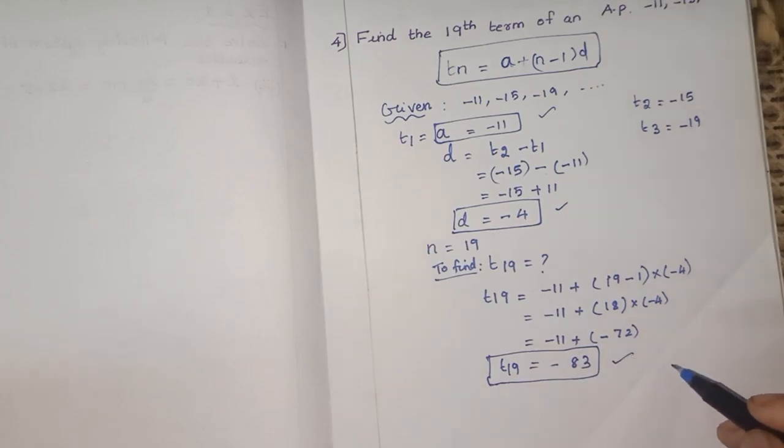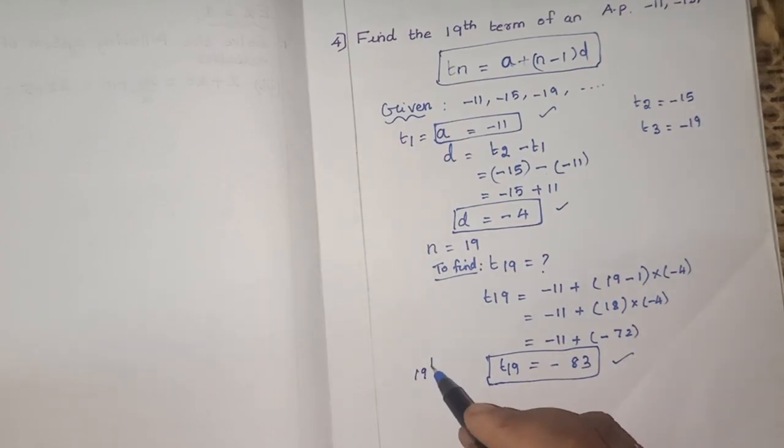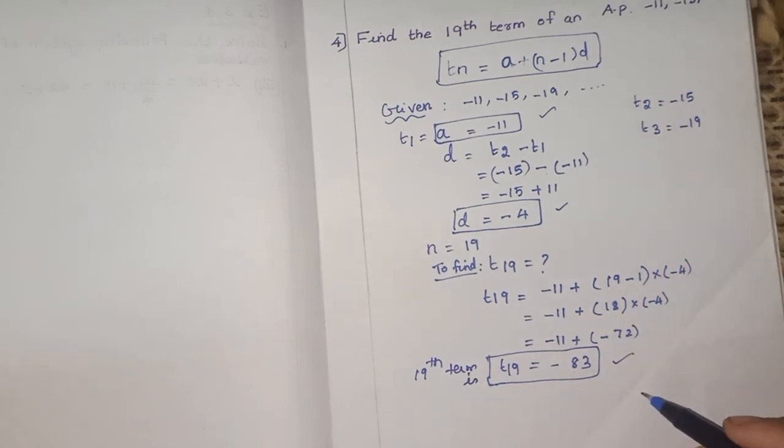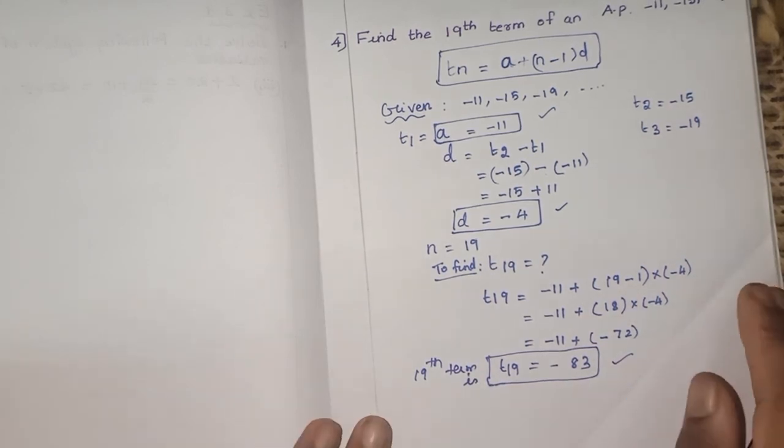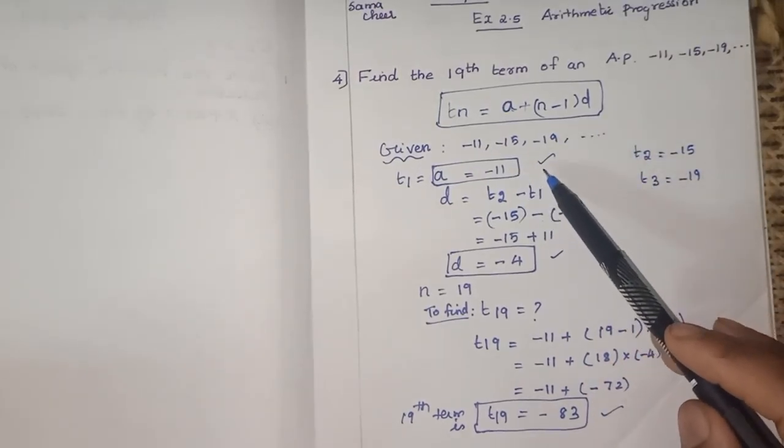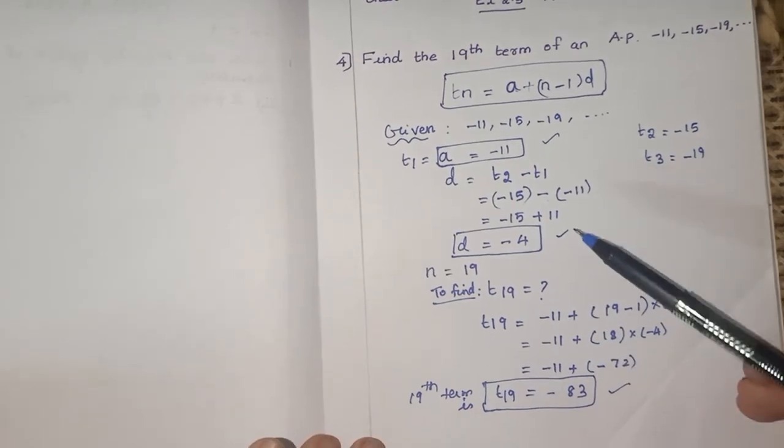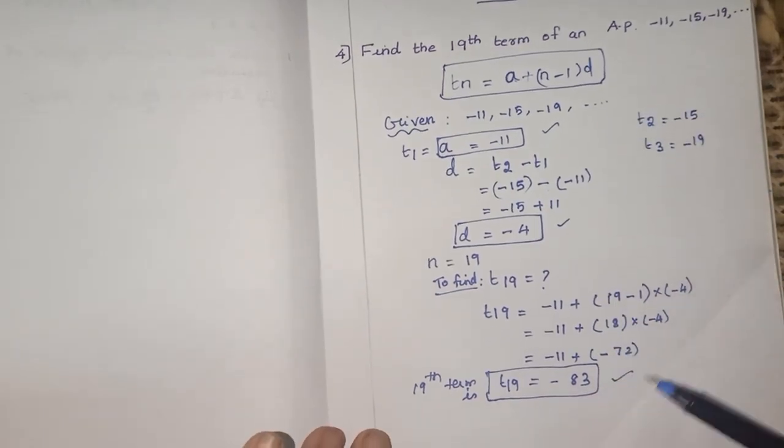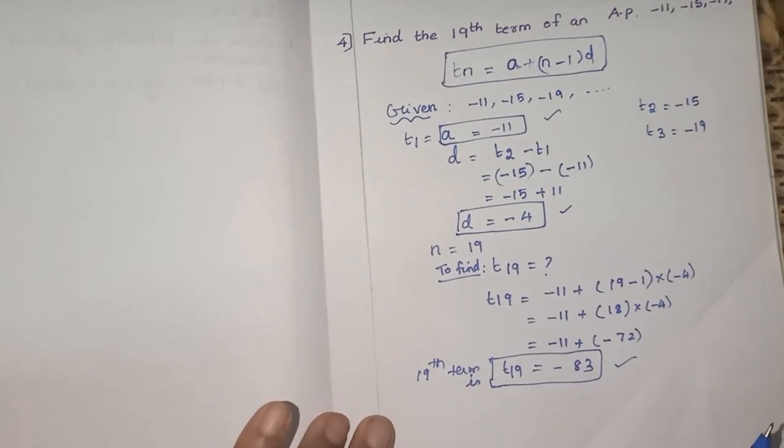So this is our answer. So 19th answer, 19th term is what? T19 that is minus 83. So you have to highlight those formulas and what we are finding from the question. So it will be easy, it's like a good presentation. Finally you have to highlight the answer. As per the question, 19th term is T19 is equal to minus 83.